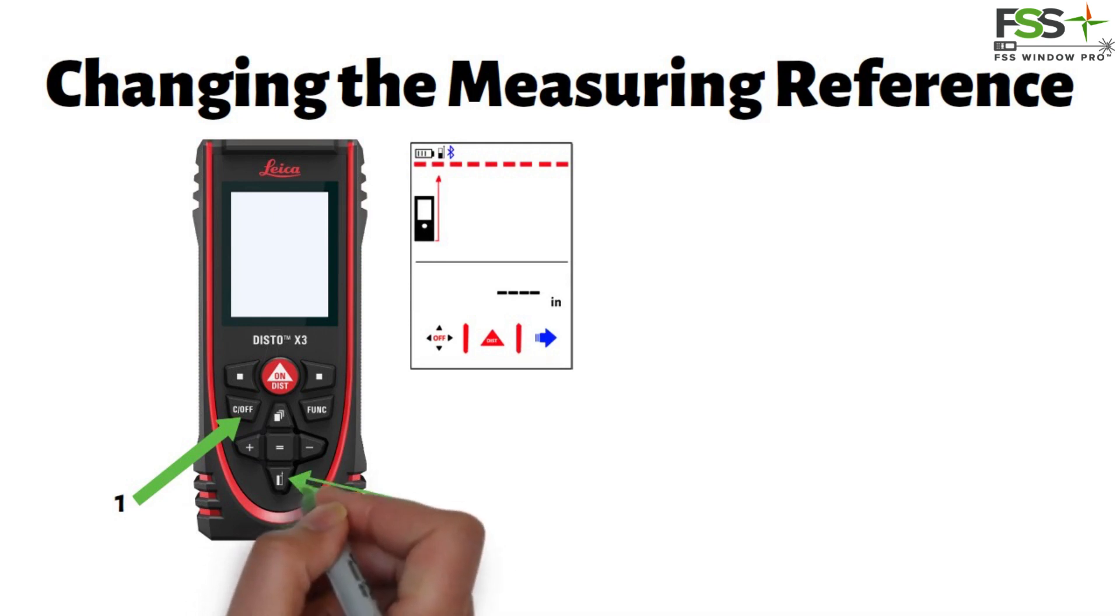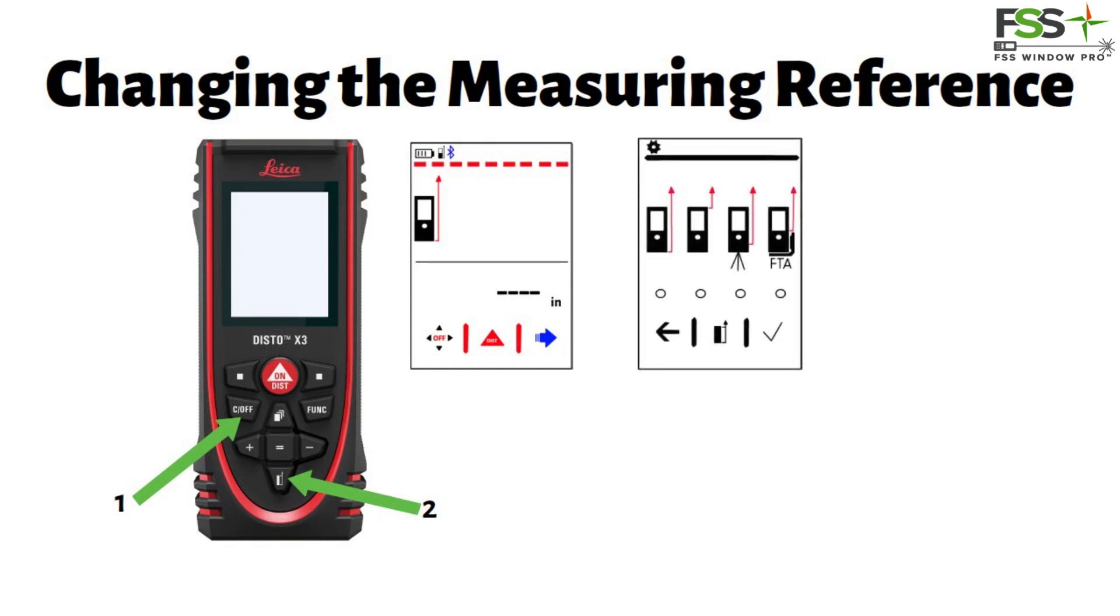While that image is visible, press the bottom button on the device, which also substitutes as the down arrow. This will open the screen allowing you to pick from 4 different orientation options.